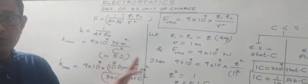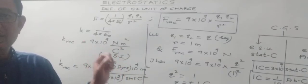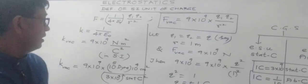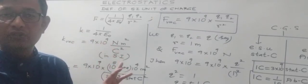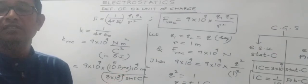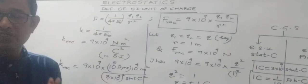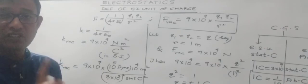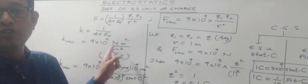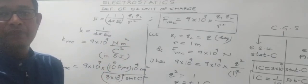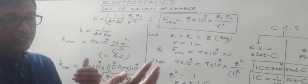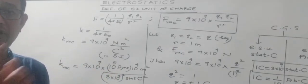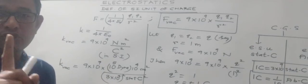So the SI unit of charge is coulomb while the CGS unit of charge is stat coulomb. The relation is 1 coulomb equals 3 into 10 to the power 9 stat coulomb. The value of K depends on two factors: the system of units chosen. In SI, distance is in meters, force in Newton, charge in coulomb — giving K equals 9 into 10 to the power 9 Newton meter squared per coulomb squared. In CGS, where charge is in stat coulomb, distance in centimeter, and force in dynes, the value of K is unity, that is 1.